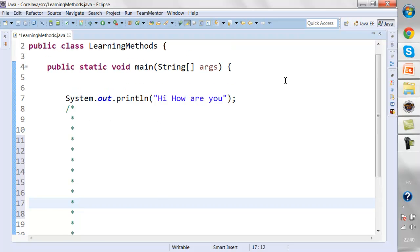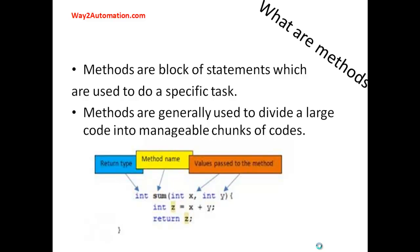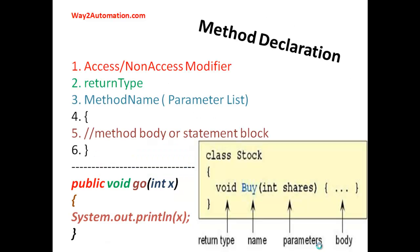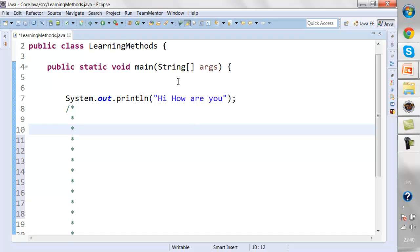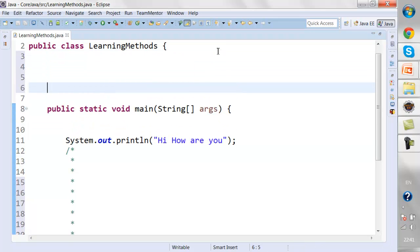There are some syntax and declaration rules for methods that are very important. There are six mandatory items for a method whenever you are creating or declaring a method: an access modifier, a return type, the method name, the parameter list, the method body starting with an open curly brace, and ending with a close curly brace. We'll go back to Eclipse and create some methods to get a better understanding.